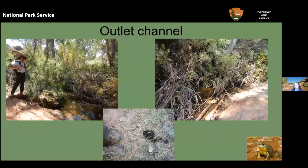The small stream that comes out of the pond quickly disappears into the sand and doesn't reach the main canyon bottom — that's part of the pond's isolation. But there's an amazing amount of wildlife around it: deer, mountain lion, bear scat, turkey tracks, and fox tracks. It is definitely a water source and important habitat for a number of wildlife species.